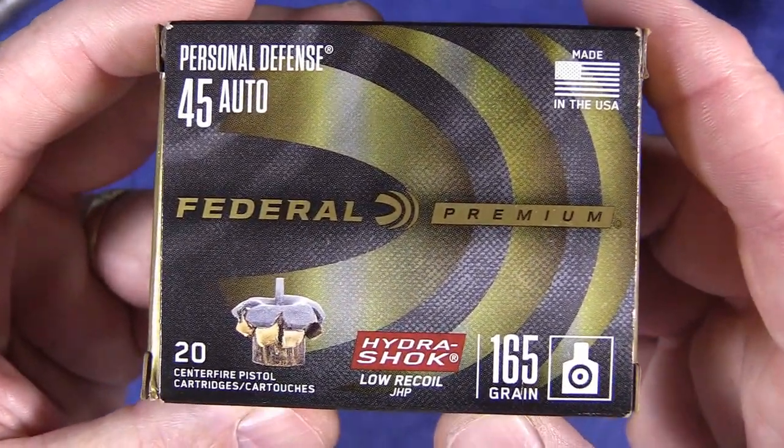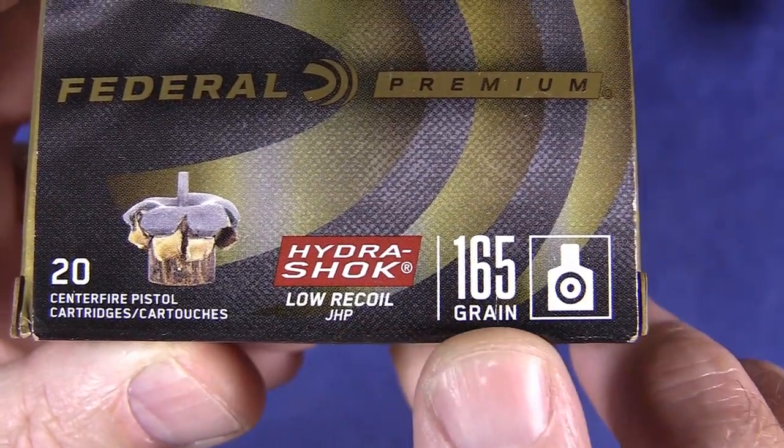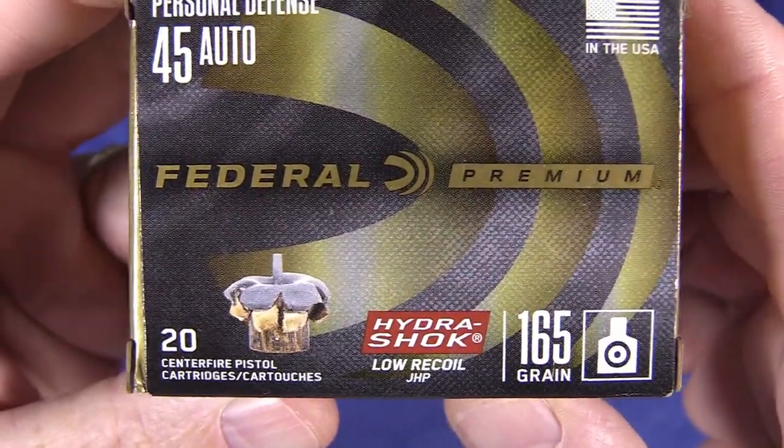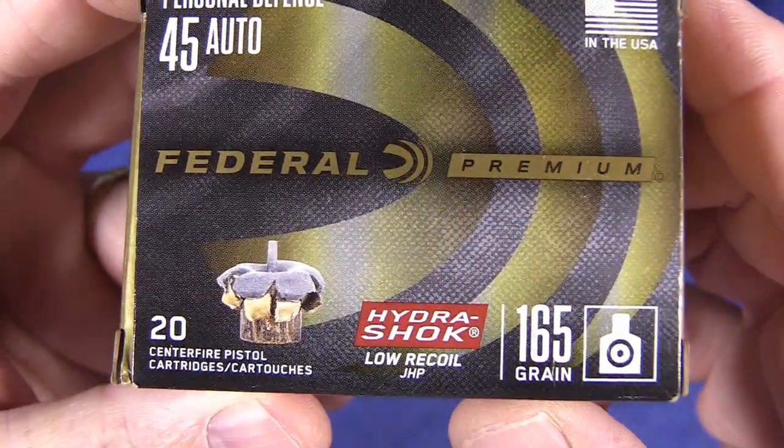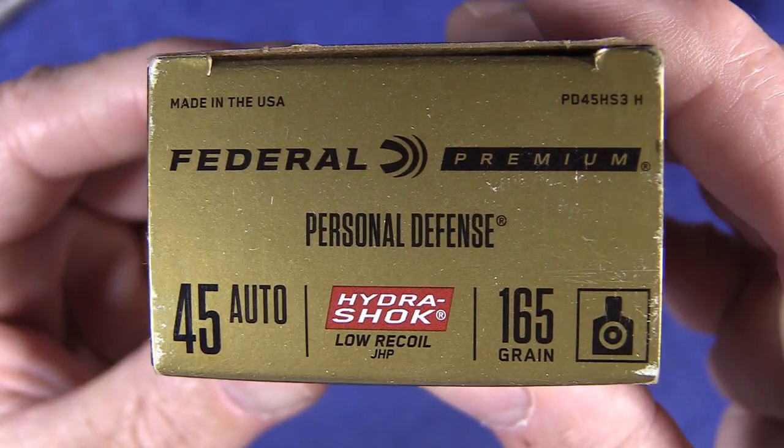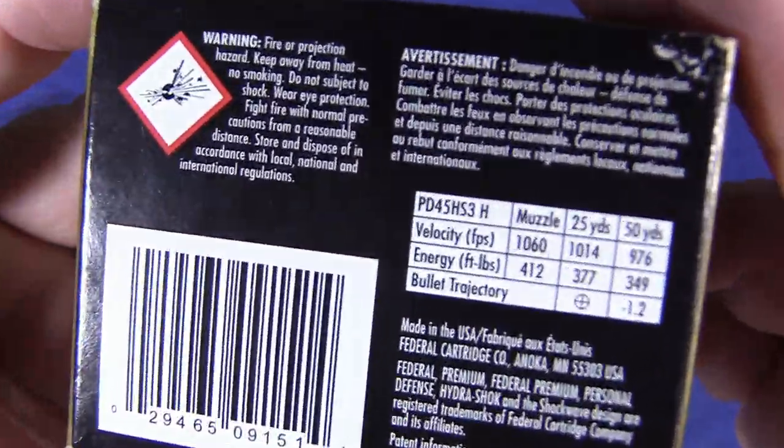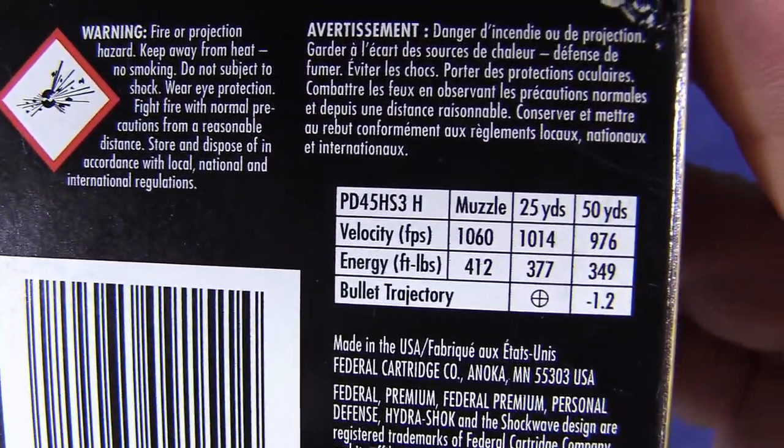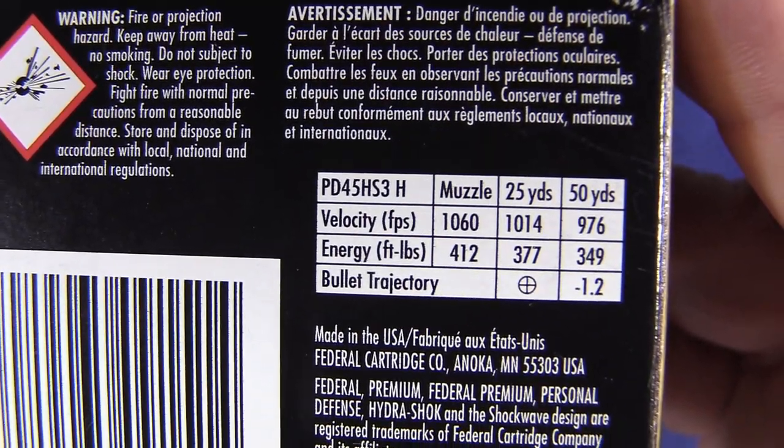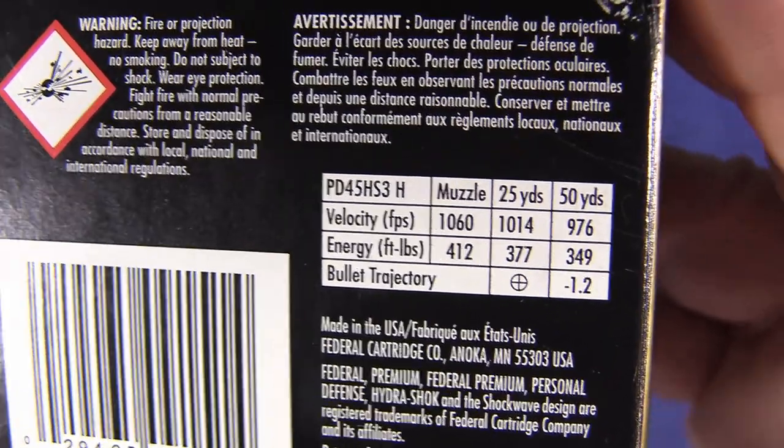Federal Hydra-Shok, look at this. Low recoil, jacketed hollow point, 165 grains. You don't see 165 grain 45 ammo very often. So we're going to take a look here at the box and then I'll pop it open. Look at the specs here: velocity 1060 feet per second, energy 412 foot-pounds. That's pretty dang good.